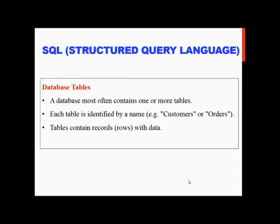Each table is identified by a name. That table has a unique name, and it contains rows and columns with information and data. Any name can be given for a table.